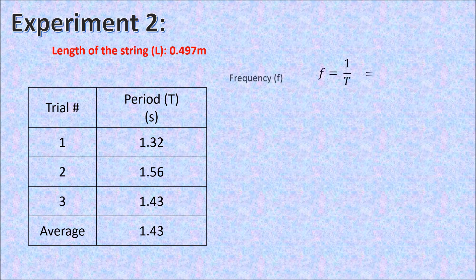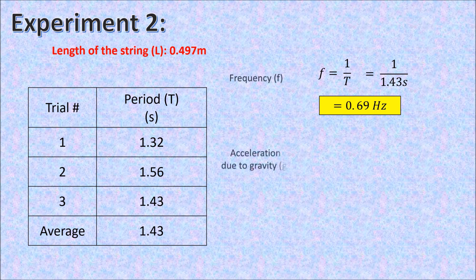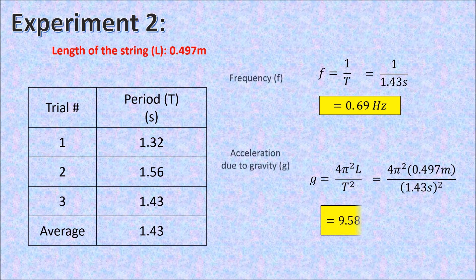To get the frequency, we divide 1 over the period, which is 1 over 1.43 seconds, and the frequency is 0.69 Hz. For acceleration due to gravity, we will use the equation 4 pi squared length over period squared. G is 9.58 m per second squared.